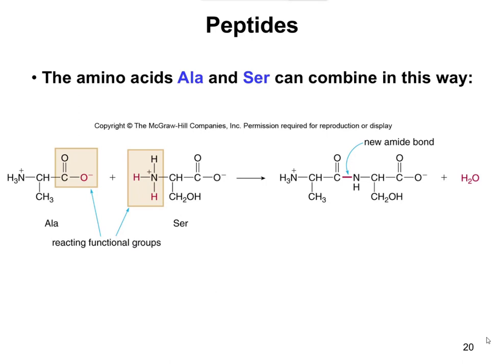So how do two amino acids come together — what's the chemistry? If you have alanine reacting with serine, the CH3 for alanine and the CH2OH for serine aren't doing anything. The parts that matter are the carboxylic acid group (COO-) and the amine group (NH3+). Those two come together, water (H2O) is removed, and you form a new amide bond linking the carbon to the nitrogen. That is how you form the new amide bond or peptide bond.